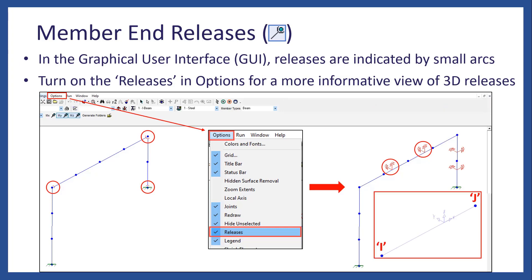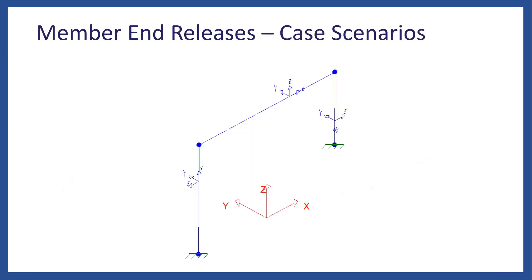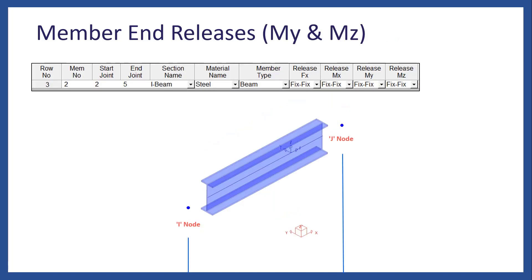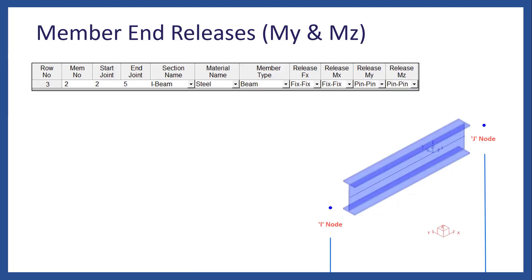Let's focus on some case scenarios for member end releases, specifically for the top beam of a portal frame composed of three members, where the local axis of each member is shown in blue. Beginning with the most common case: releasing moments about Y and Z. When MY and MZ are set as pin-pin, this means both ends are released from transferring moments in MY and MZ to the other elements connected to this beam. FX, FY, FZ, and MX will still get transferred from both ends of the beam to the columns.